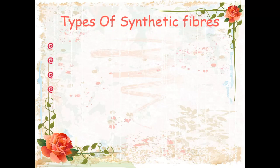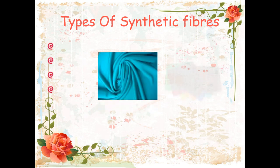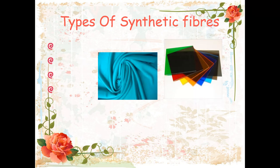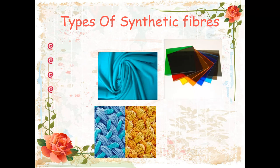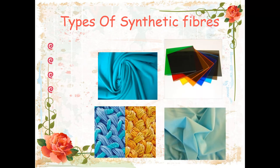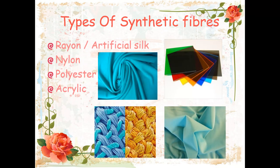Now let's look at the types of synthetic fibers. There are four types of synthetic fibers: number one is rayon, number two is nylon, number three is polyester, and number four is acrylic.